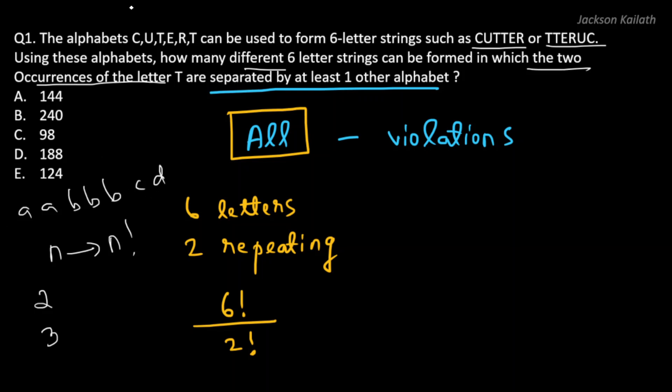Now if this was the case, then the number of arrangements that can be done would be 1, 2, 3, 4, 5, 6, 7 - that's the total number of letters. That's 7 factorial divided by 2 factorial times 3 factorial because these are repeating. So that was just a side note. Now let's continue.